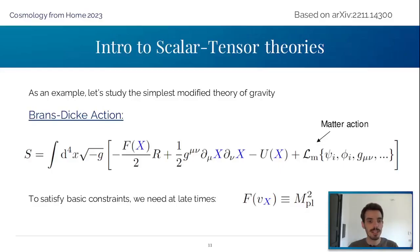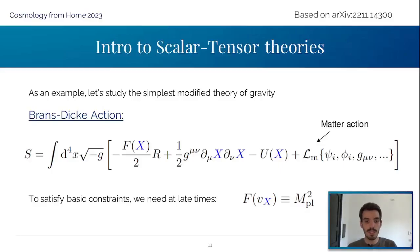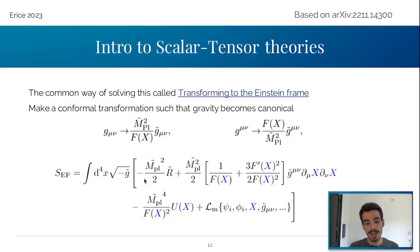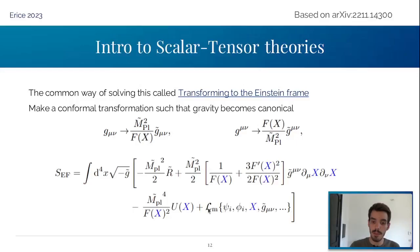The best example is the Brans-Dicke action. Remember that the Planck mass is given by the vacuum expectation value of the field. One of the best ways to do this transformation, which everyone normally uses, is called going to the Einstein frame. We take the metric and make a conformal transformation depending on the function f of x. When we go to the Einstein frame, this conformal transformation gives us a canonical Einstein-Hilbert term for gravity, and all the modifications that are no longer in the gravitational sector now appear in the standard model.